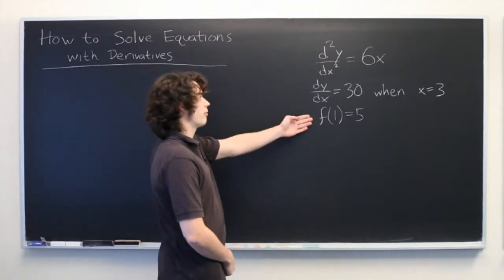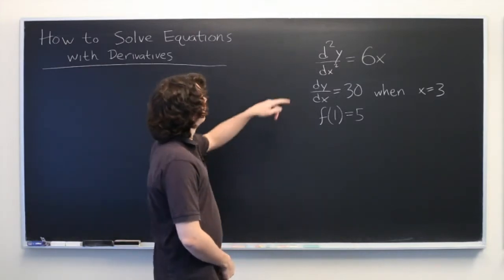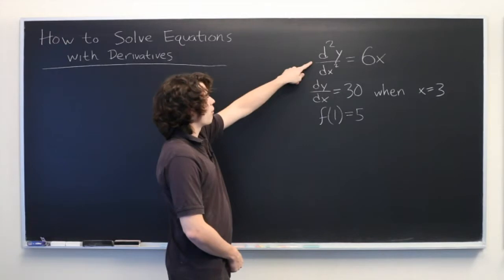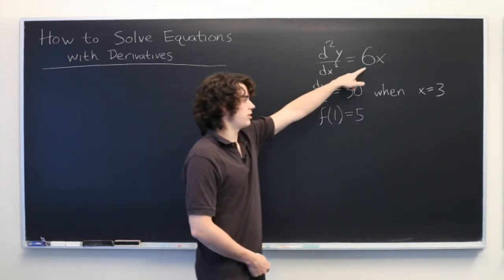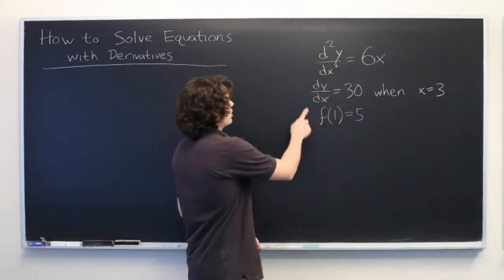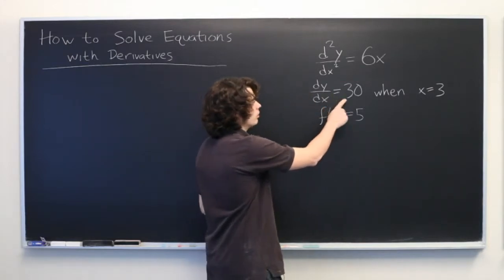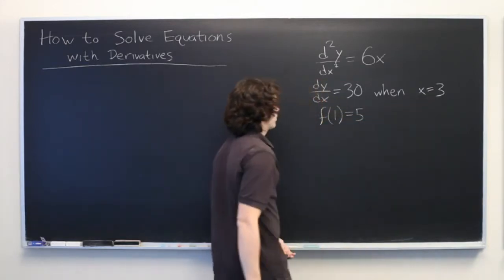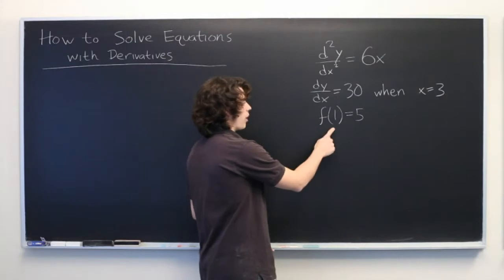Here we're given three pieces of information about a function. We know that the second derivative of y with respect to x is 6x. We know that dy dx is equal to 30 when x equals 3. And we know that f of 1 is equal to 5.